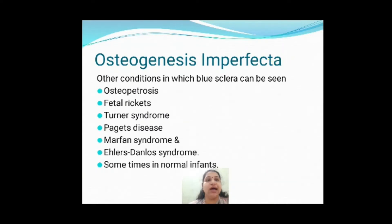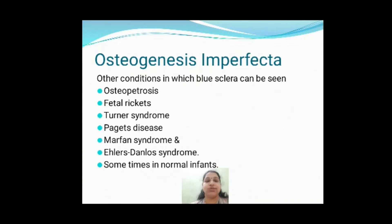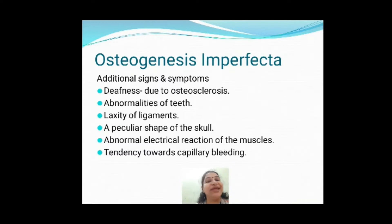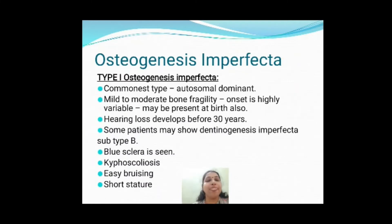Blue sclera can also be seen in other conditions like osteopetrosis, fetal rickets, Paget's disease, and Marfan syndrome, but it is most majorly associated with osteogenesis imperfecta. Apart from bone fragility and blue sclera, additional features include deafness, teeth abnormalities, peculiarities in skull shape, and a tendency towards capillary bleeding or bruising. There are four main types — type one to type four.